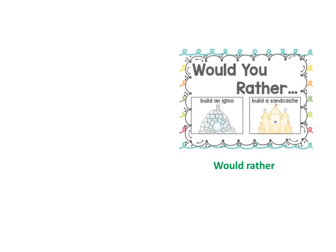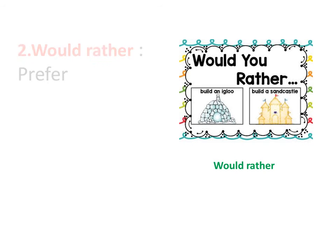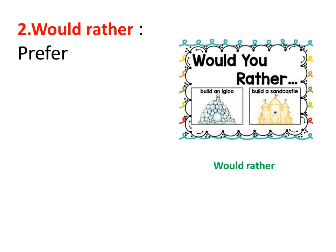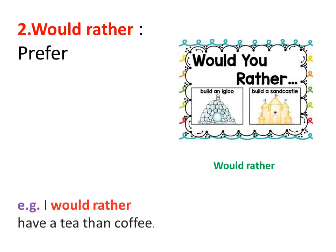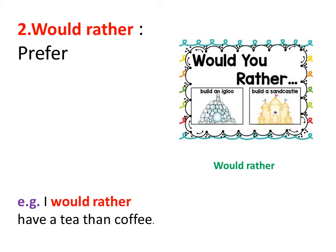Number 2: Would rather. Would rather means prefer — to prefer something. For example, I would rather have tea than coffee. So would rather means prefer.